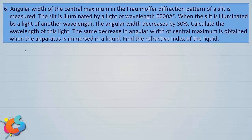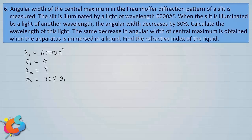Let's write down the data as given. The first wavelength λ₁ is 6000 angstrom, and the angular width is θ₁, which I'll write simply as θ. When the wavelength is changed to the unknown λ₂, the angular width θ₂ is reduced by 30%, so the new width is 70% of θ₁, which is 0.7θ. Using this data, let's calculate the unknown wavelength.